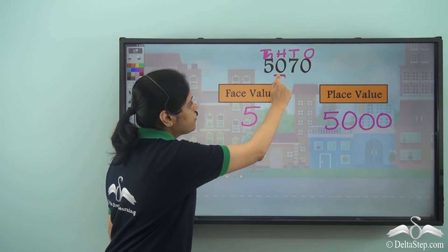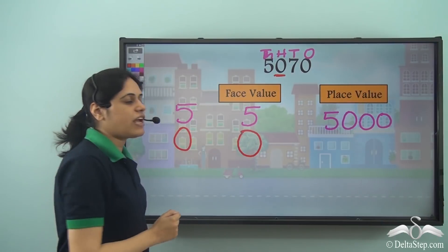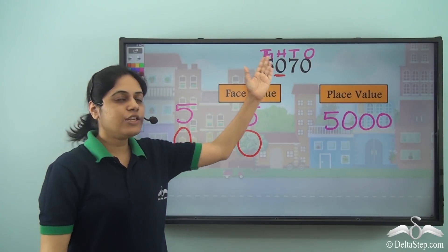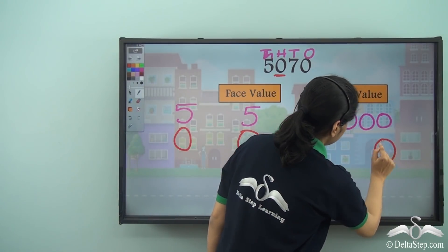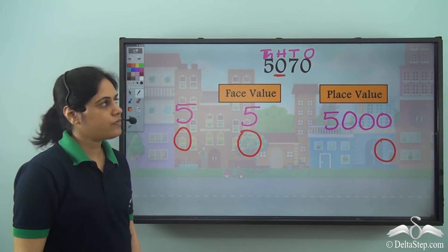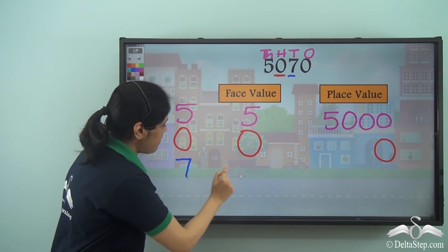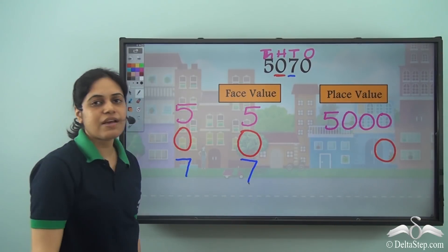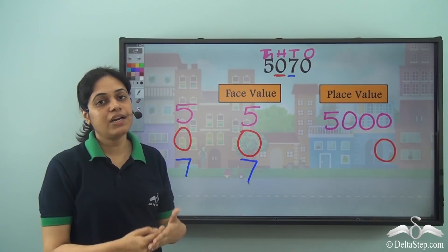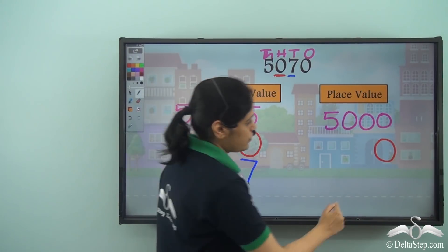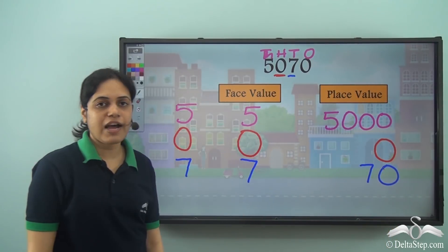What about 0? 0 has a face value of 0, and 0 hundreds means 0 — 0 hundreds means nothing, so 0. What about 7? 7 has face value 7, and 7 is in the tens place. 7 tens means 70. So I have 70 as the place value of 7.